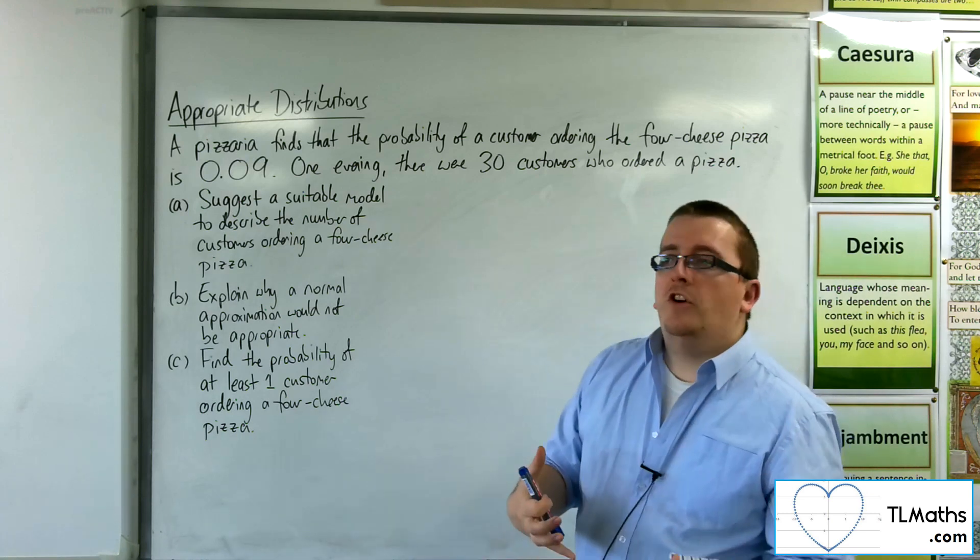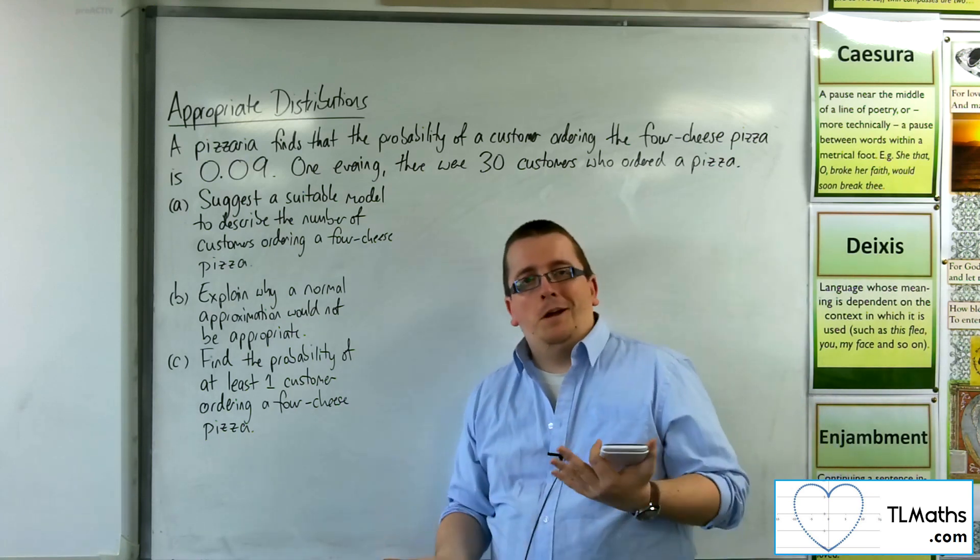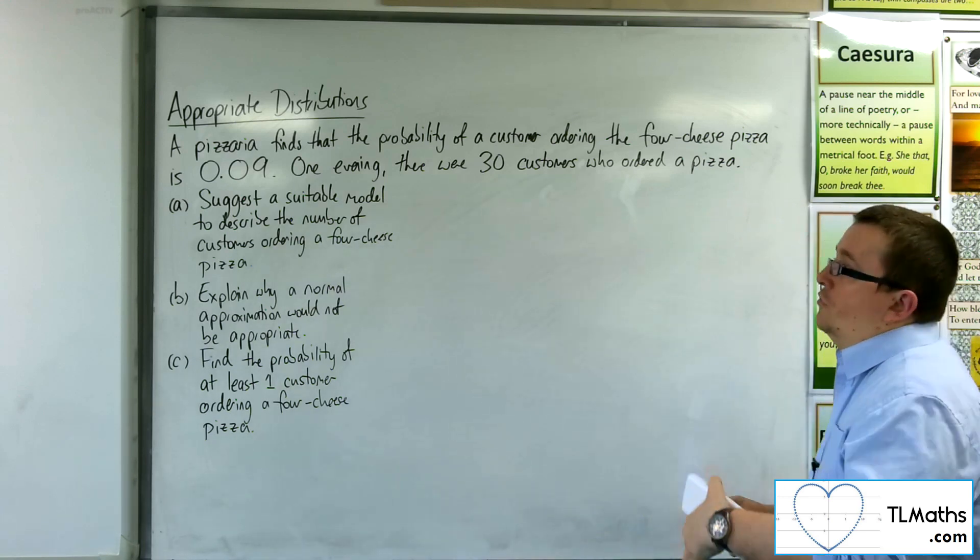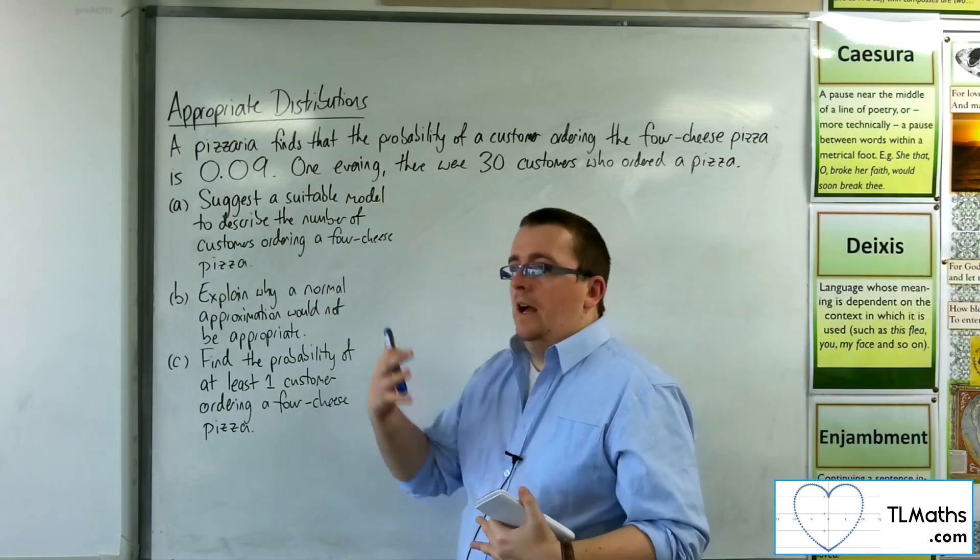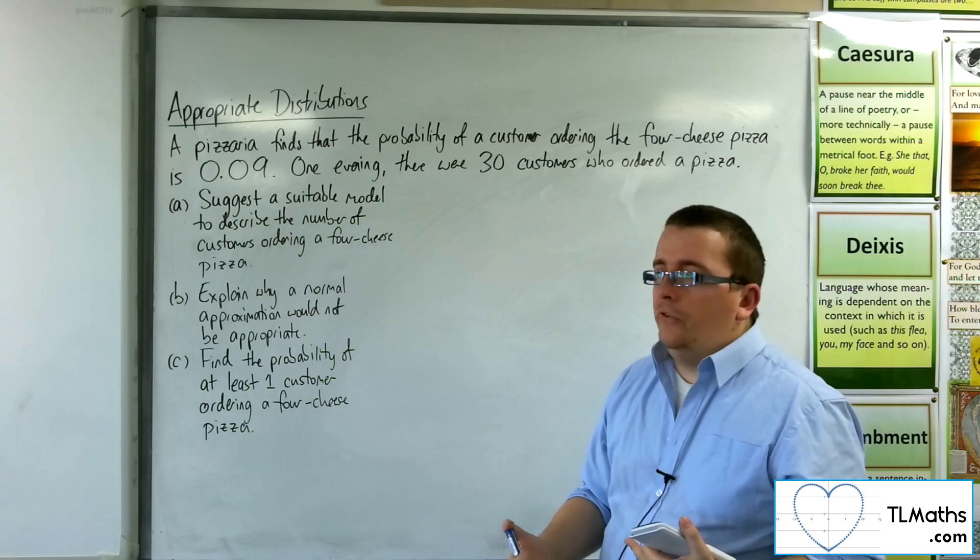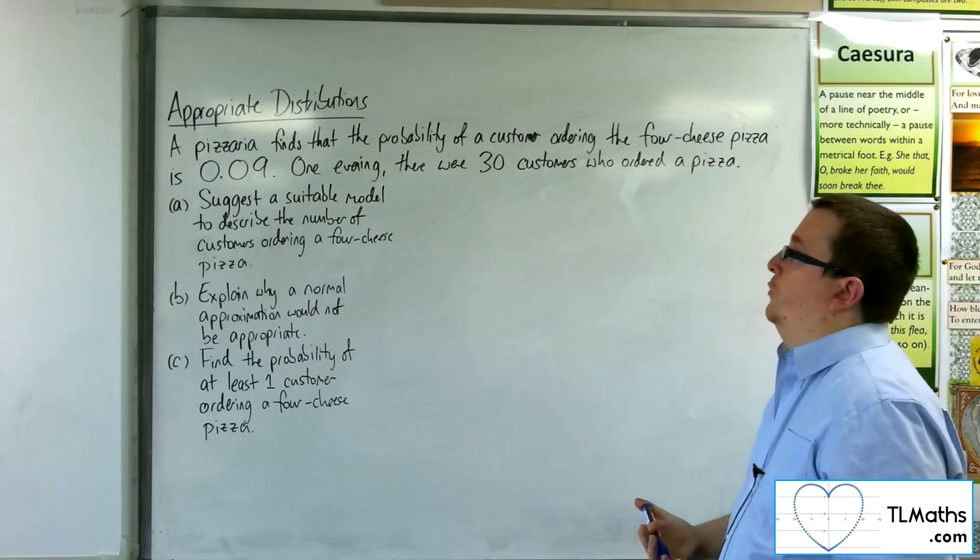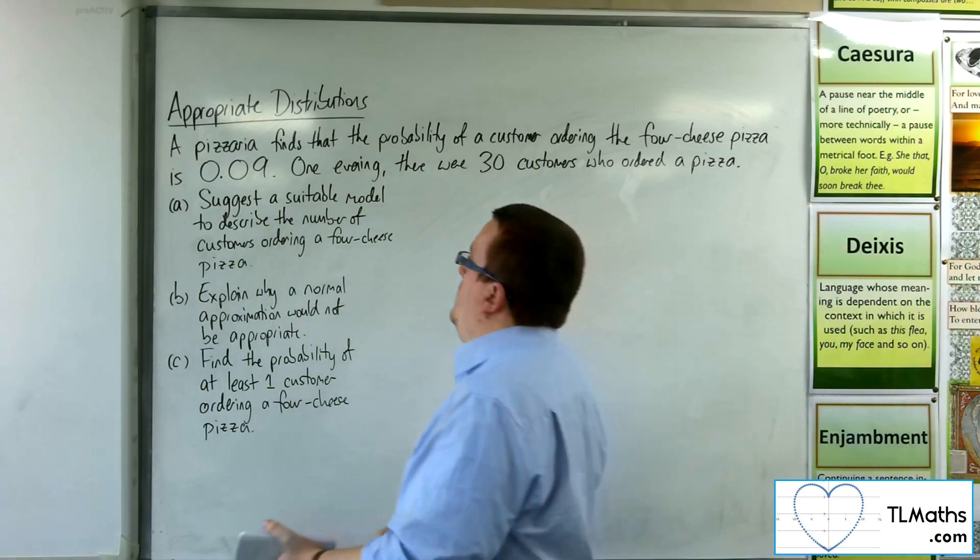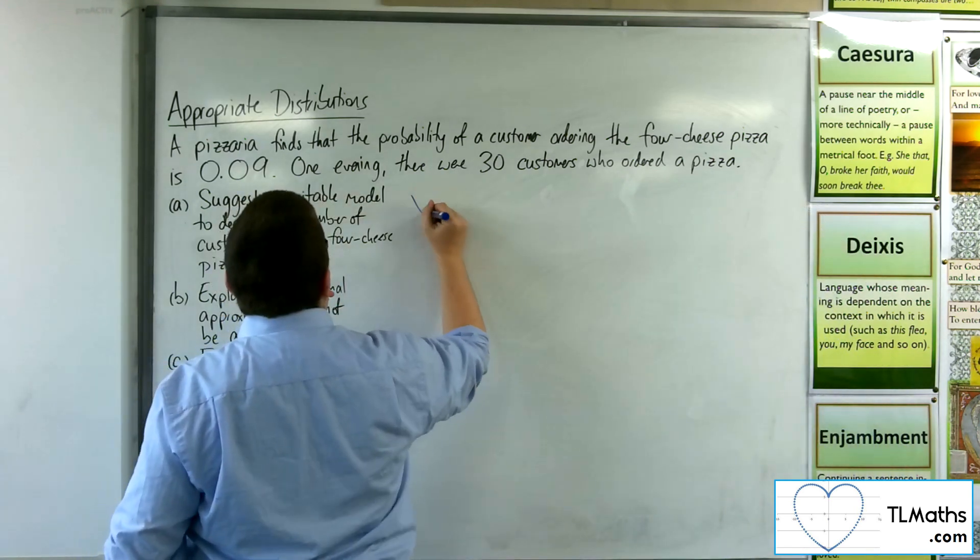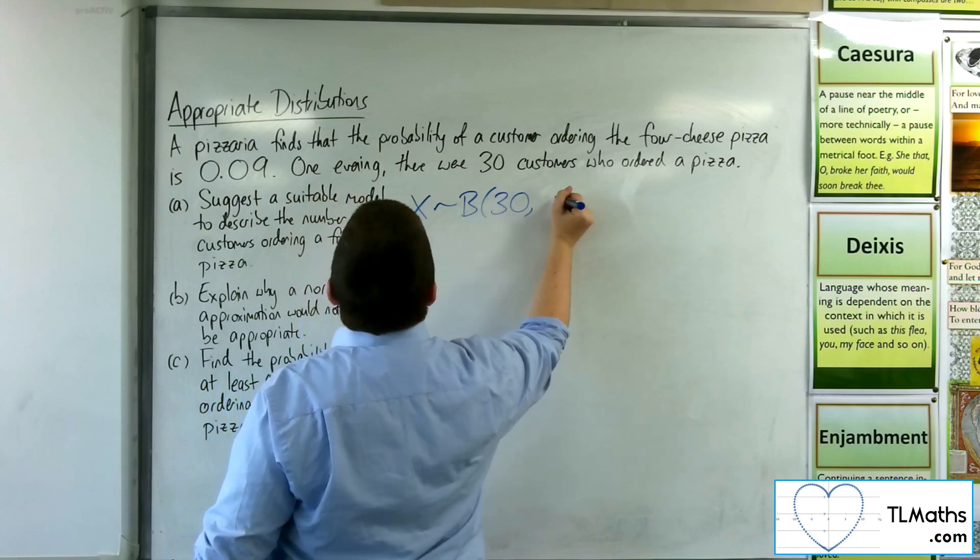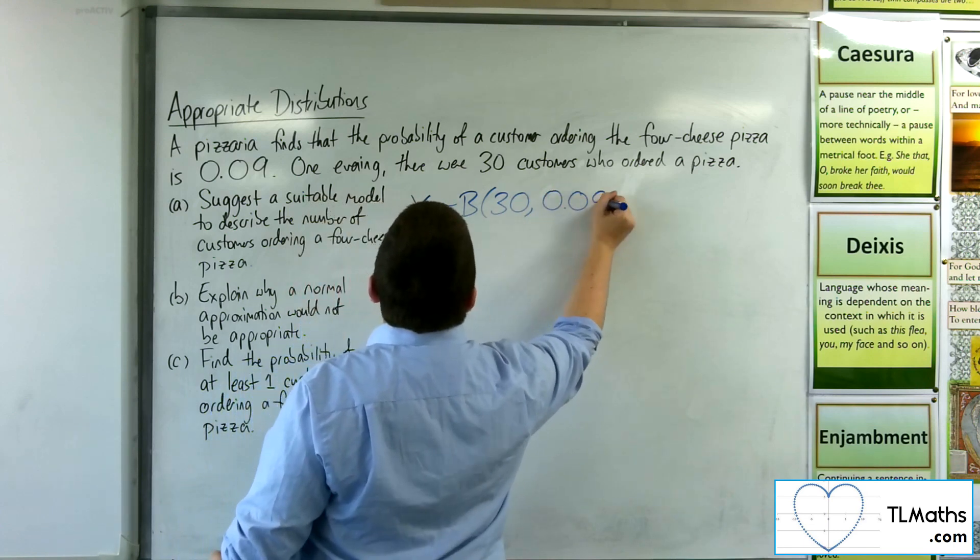The question of independence, whether the probability of one person ordering a four-cheese pizza is independent of somebody else, we'd have to assume that independence in order for the binomial to work. So we'd be looking at x being a binomial distribution with n as 30 and probability 0.09.